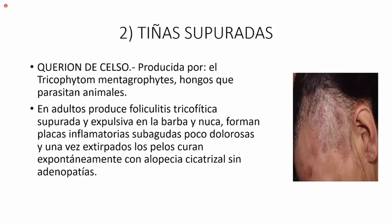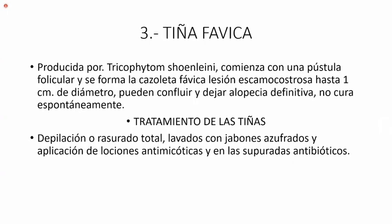Las tiñas supuradas: el querion de Celso, producido por el Trichophyton mentagrophytes, hongo que parasita también animales. En adultos produce foliculitis tricofítica supurada y expulsiva; a veces creen que es acné y los tratamientos para acné no curan porque es un hongo. Hay variedad expulsiva en barba y nuca: forman placas inflamatorias subagudas poco dolorosas y una vez expulsados los pelos se curan espontáneamente con alopecia cicatrizal, sin adenopatías. La tiña fávica, producida por el Trichophyton schoenleinii, comienza con una pústula folicular y se forma la cazoleta fávica: lesión eritematosa escamocostosa hasta un centímetro de diámetro. Pueden confluir y dejar alopecia definitiva; no cura espontáneamente y requiere tratamiento con antifúngicos.